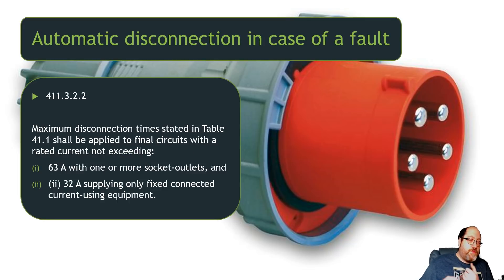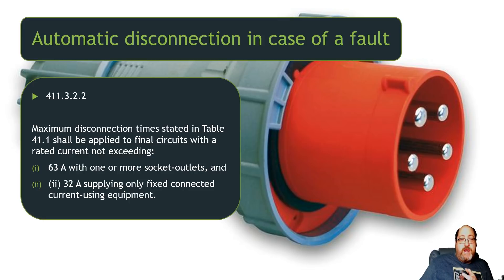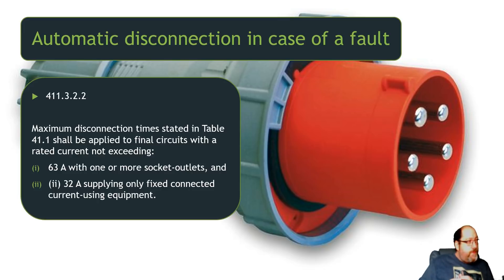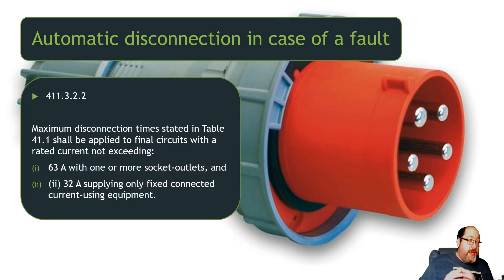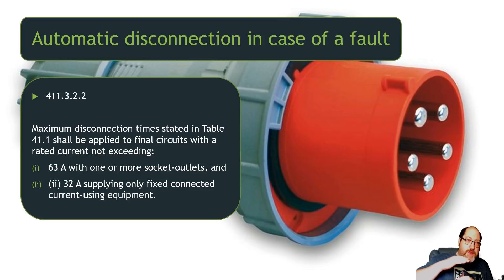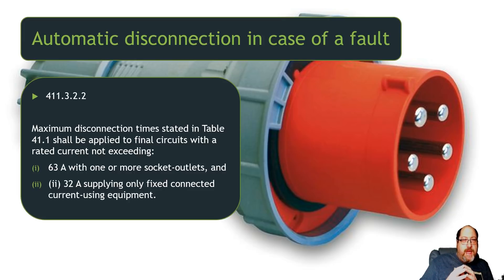Regulation 411.3.2.2.2 covers the disconnection time requirements for automatic disconnection of supply — whether for final circuits up to 32A or distribution circuits on TN or TT systems. The table gives 0.4 seconds for a TN system. It used to apply to final circuits up to 32A for fixed equipment only, but for socket outlet circuits they've now increased that to 63A. So if your final circuit goes to a 63A socket outlet, it also falls within the quicker disconnection time requirement.